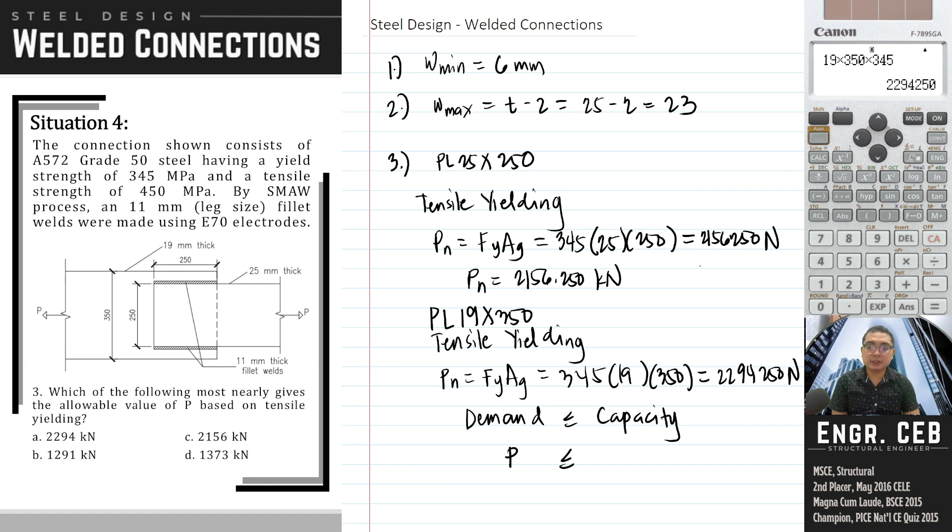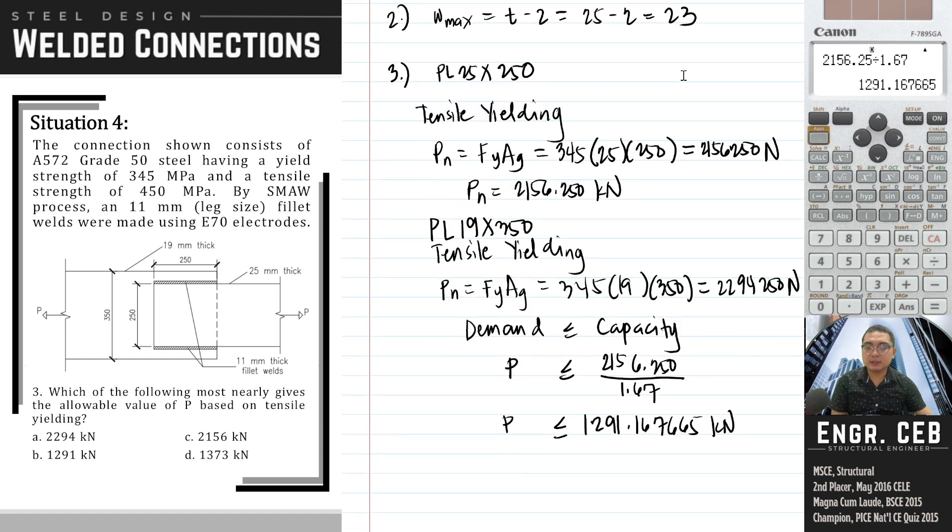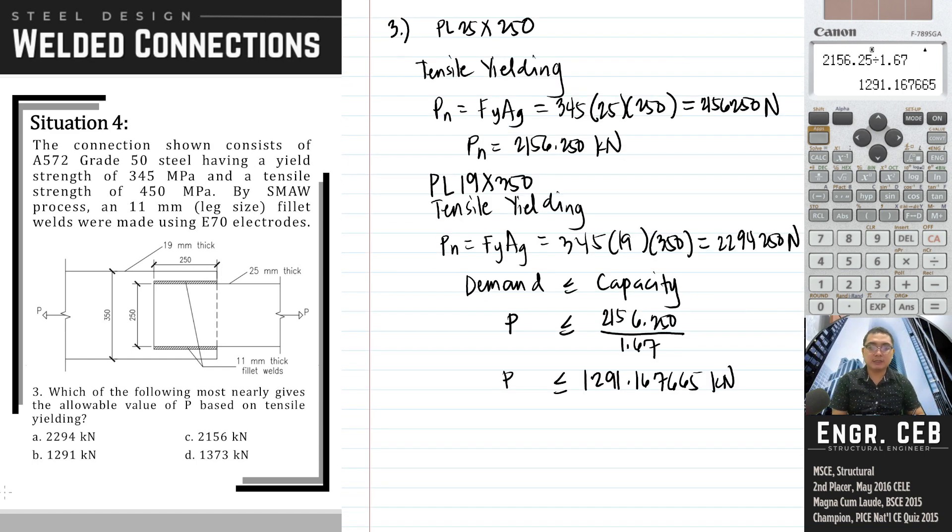For the capacity, we take the smaller capacity from the PL 25 by 250, which is 2156.25 kN. Divide by the factor of safety for LRFD. Therefore, that is 1291.17 kN. That is letter B.